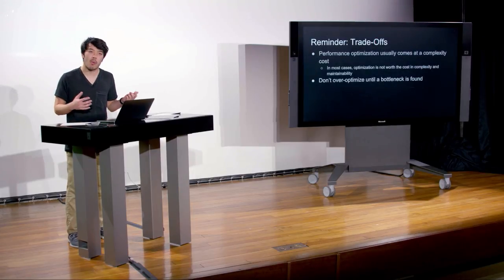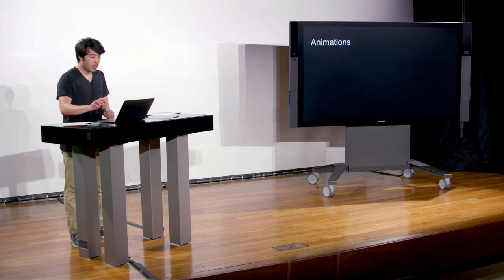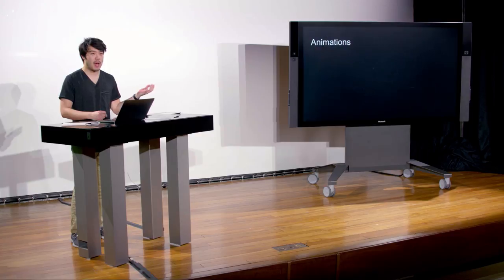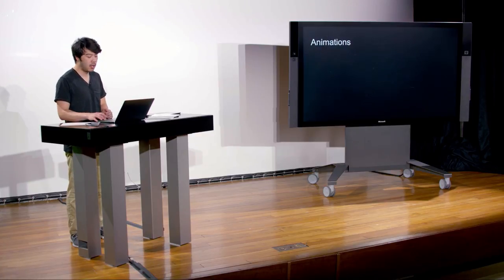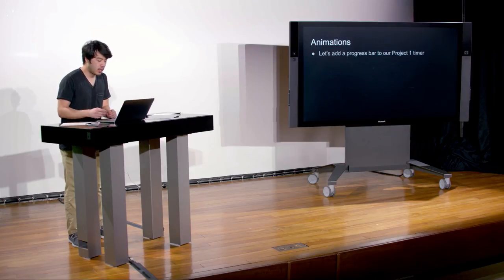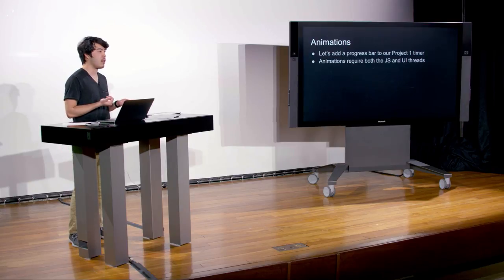Let's take a quick break. After the break, we'll look at a specific optimization built into React Native. Welcome back. Before the break, we discussed performance pitfalls in React, and I reminded you that many of these optimizations come at a complexity cost that isn't always worth it. Now let's talk about a time where performance really does matter: animations. We'll add a progress bar to the Pomodoro timer from project one, showing how much time is left.